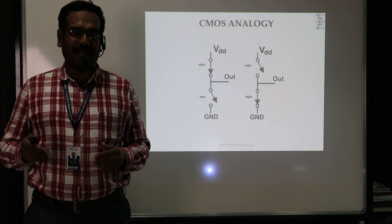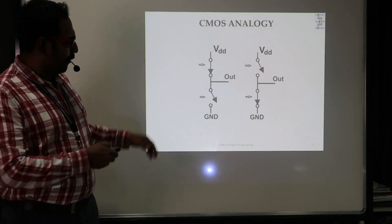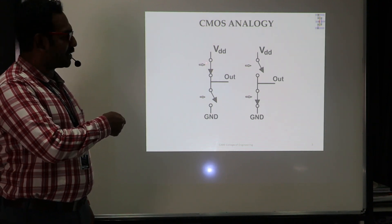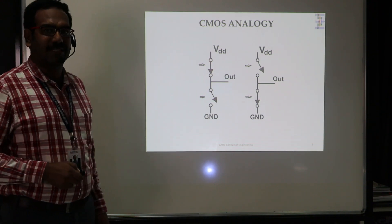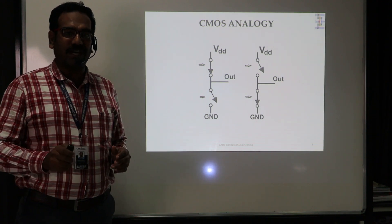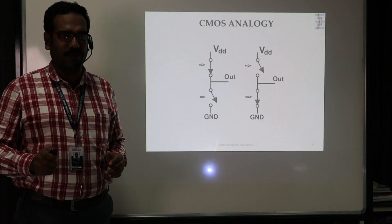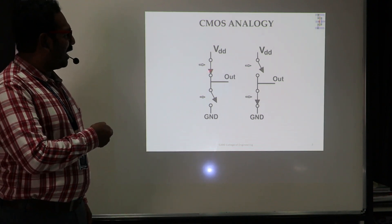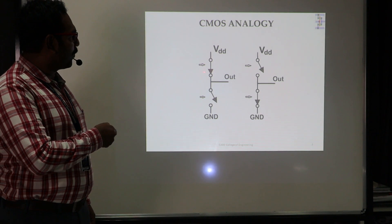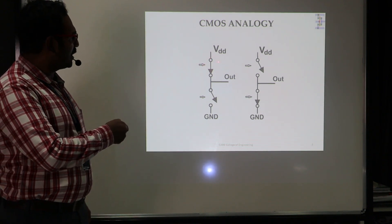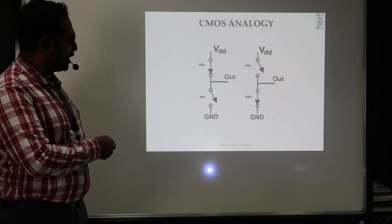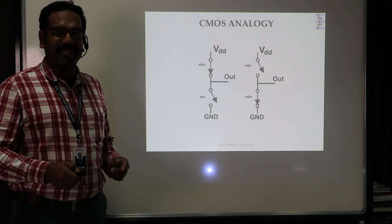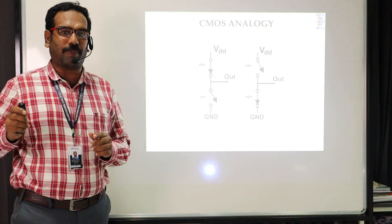I am going to explain CMOS logic with the help of an analogy. Here I have given two switches — the top switch represents the PMOS transistor and the bottom switch represents the NMOS transistor. We know that PMOS transistors switch on for logic 0 and NMOS transistors switch on for logic 1, so obviously both transistors will not be on simultaneously. If we give logic 0, the PMOS device is switched on and NMOS is switched off, so it cannot create a direct path between VDD and ground — the short circuit path is avoided, which reduces short circuit power dissipation.